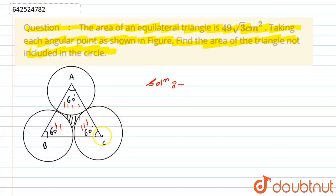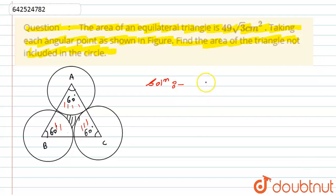First, I need to find the radius of the circle. To do that, I must find the side of the triangle, and then the radius equals half the side. The area of the equilateral triangle is given by the formula: √3/4 × a², where a is the side length.